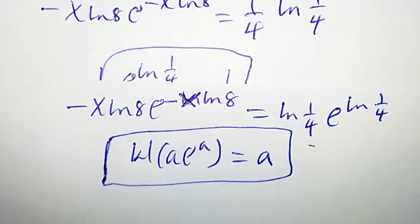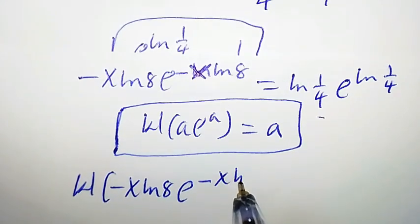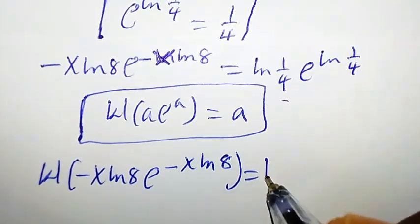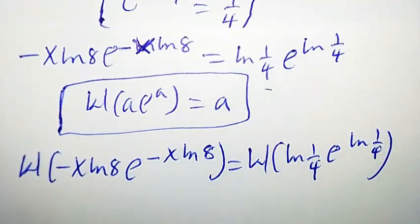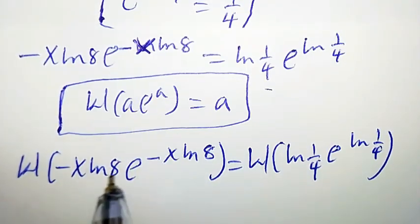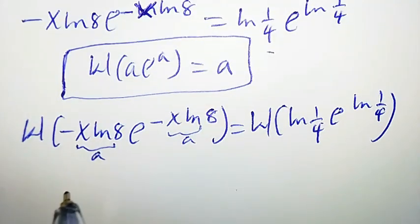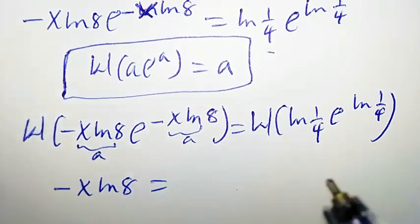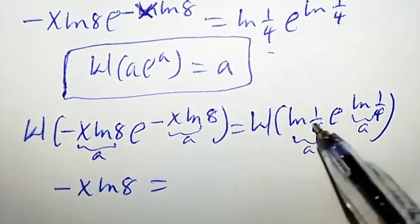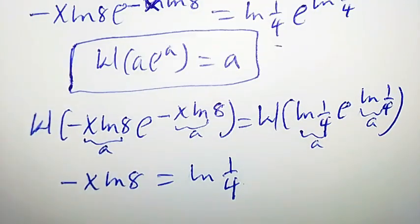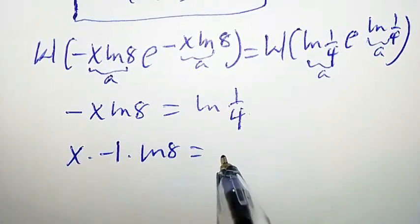Taking the Lambert W function of both sides: W of (negative x ln 8 times e to the power of negative x ln 8) equals W of (ln(1/4) times e to the power of ln(1/4)). The left side gives negative x ln 8, and the right side gives ln(1/4). So we have negative x ln 8 equal to ln(1/4), which we rewrite as x times negative 1 times ln 8 equal to ln(1/4).